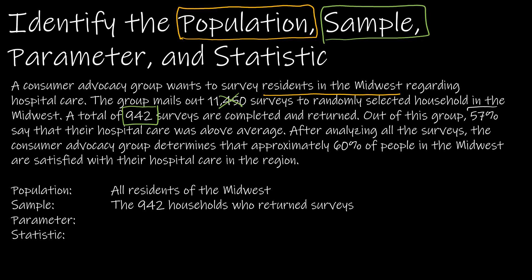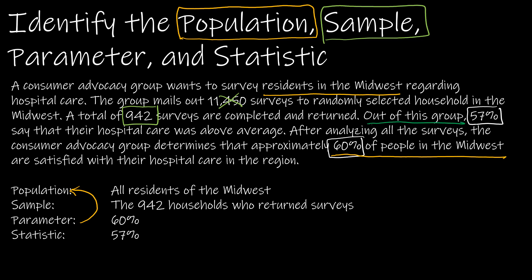We have 57% who say their hospital care was above average, and 60% of people in the Midwest. The population was all residents of the Midwest — notice this says 60% of people in the Midwest, so that is our parameter, because parameter always goes with population. The sample is the group of 942, and 57% of those is the statistic.